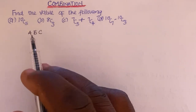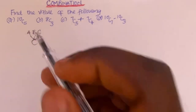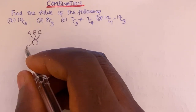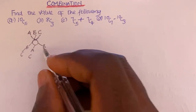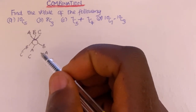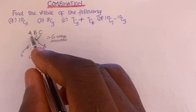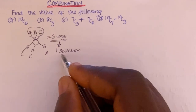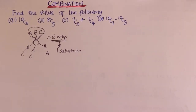Now, the number of ways through which I can rearrange all three letters in a group — for example: ABC, ACB, BAC, BCA, CAB, CBA — gives us six arrangements. All six of those ways of rearranging A, B, and C are taken together as a single selection.